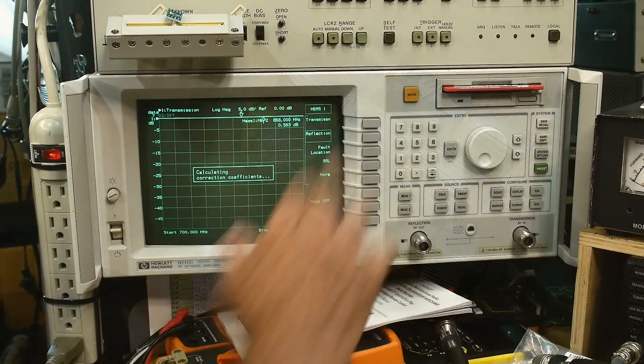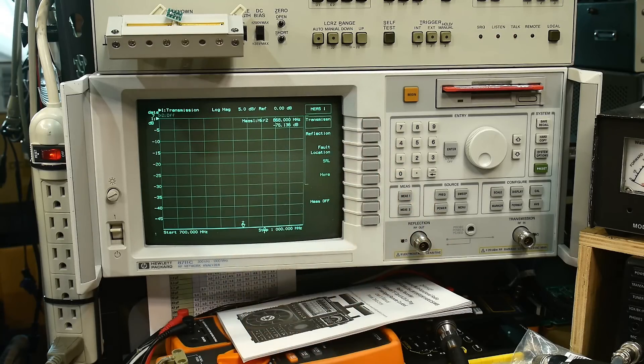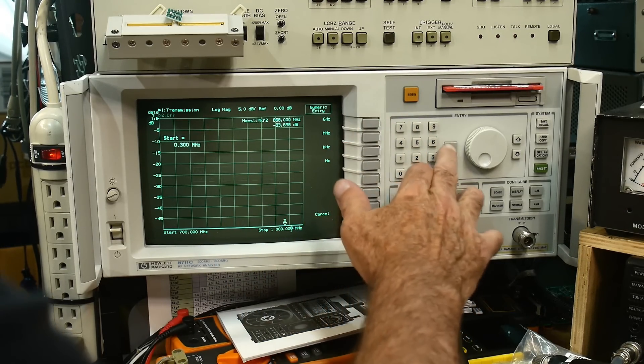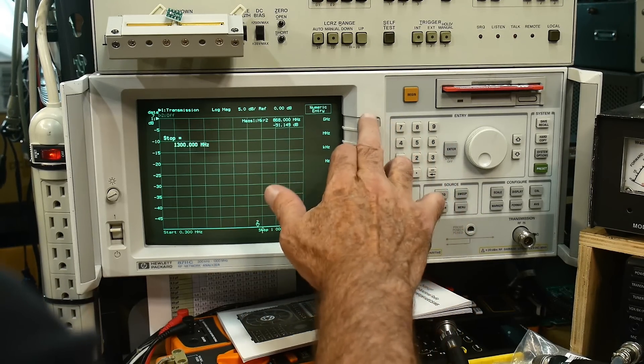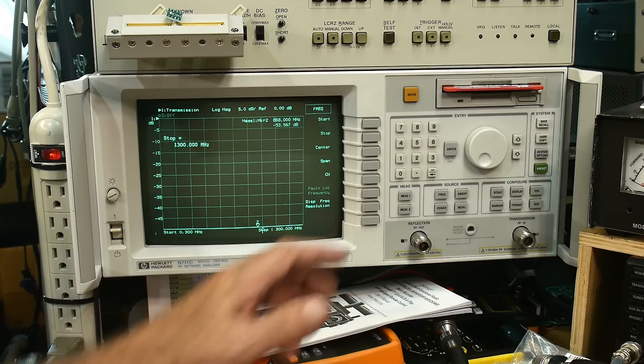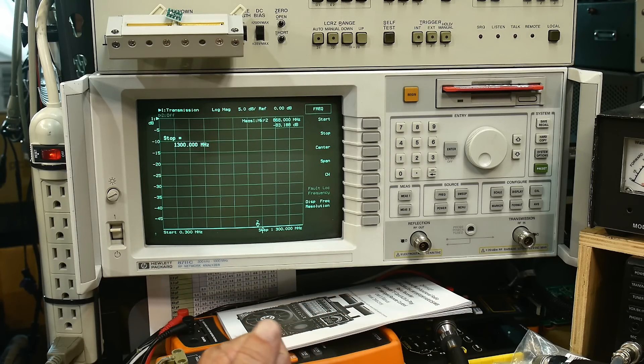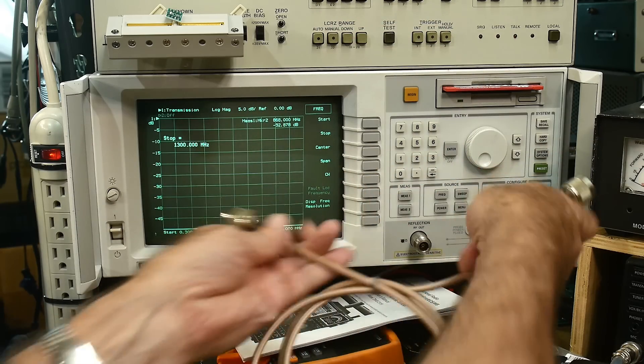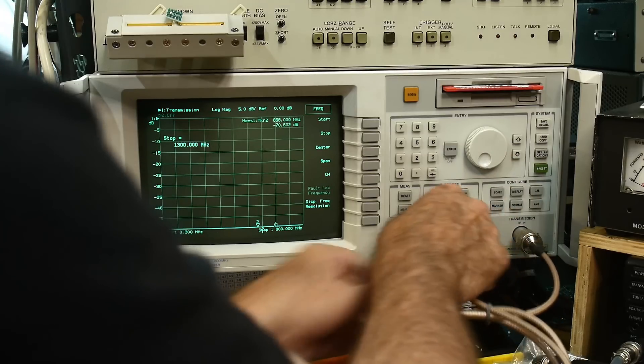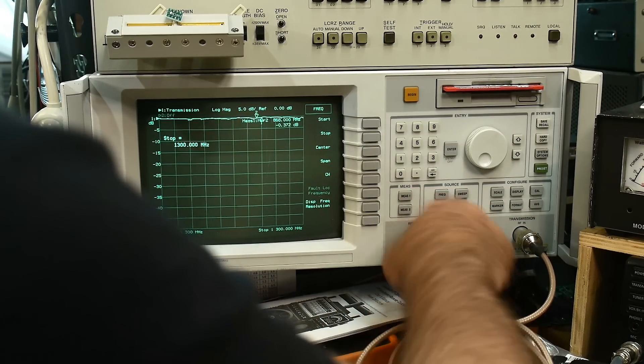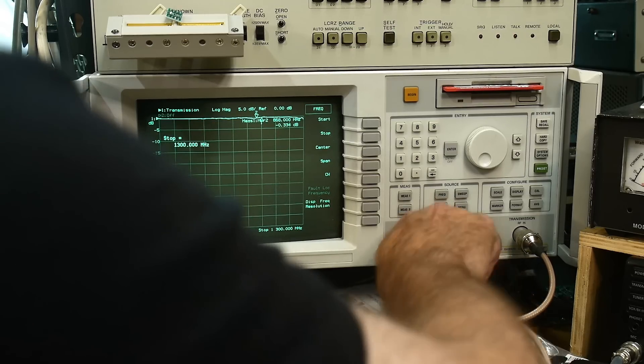All right, let's do a transmission measurement here. We will set the frequency start and stop, and so we're sweeping between 300 kilohertz and 1.3 gigahertz. All right, so we'll do a through measurement. Here's an N cable, so we'll go N to N. And we should be getting a pretty flat line with this cable, I would believe.